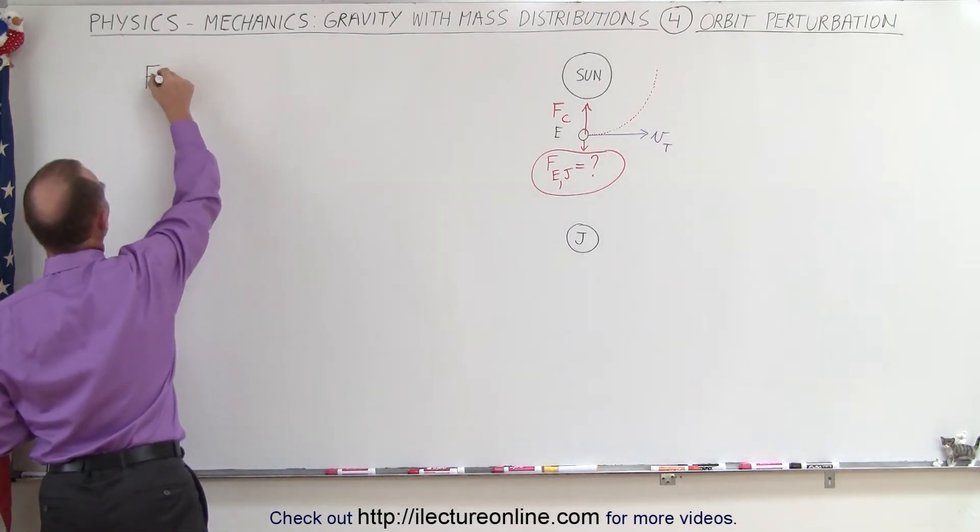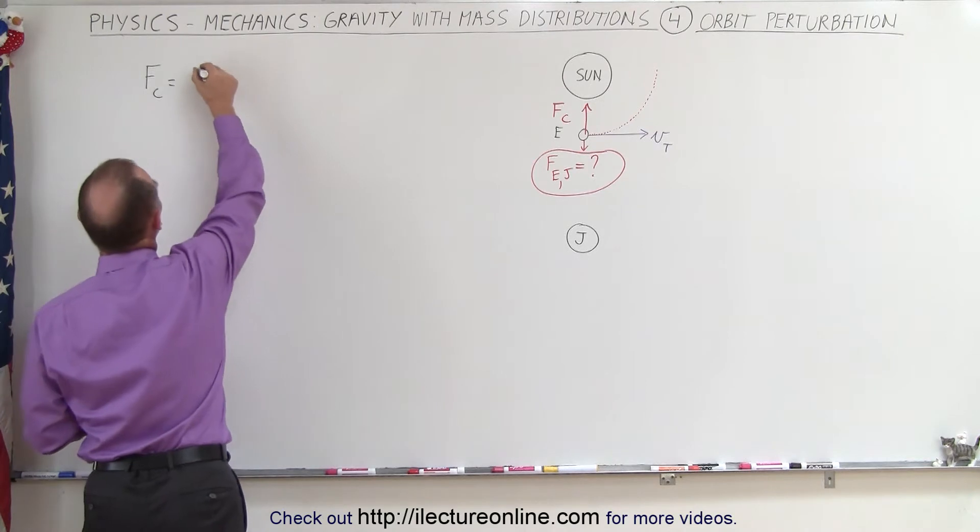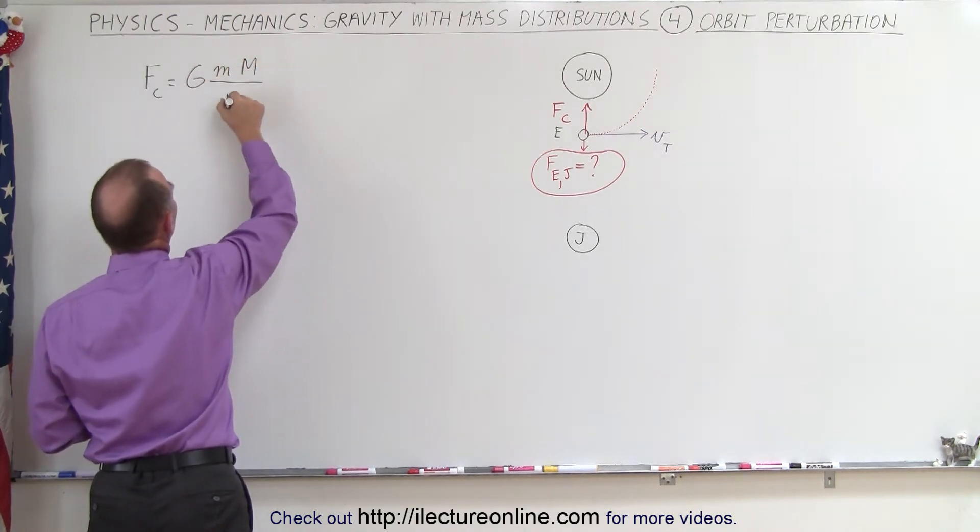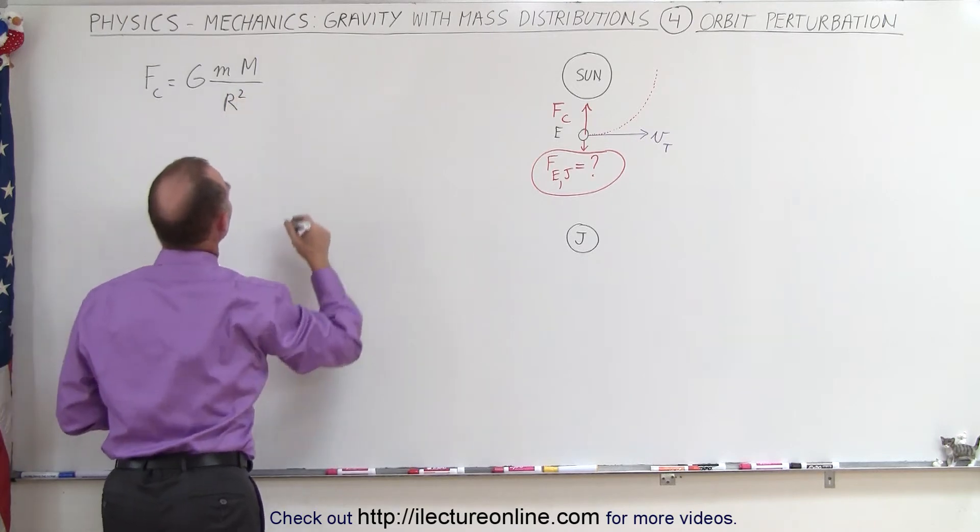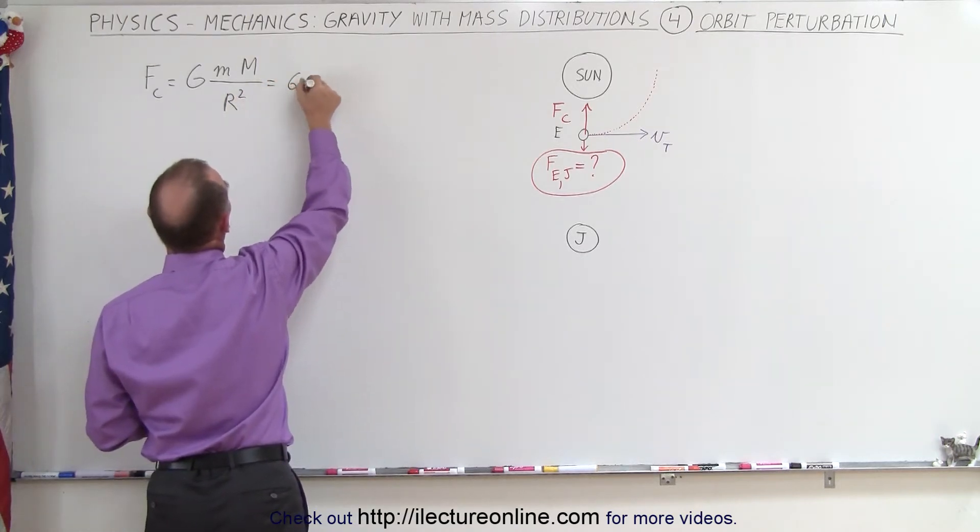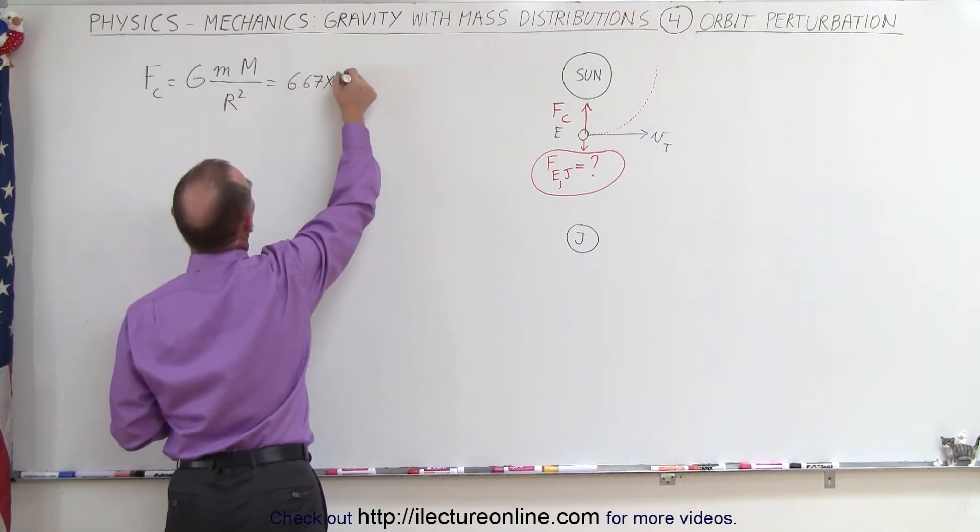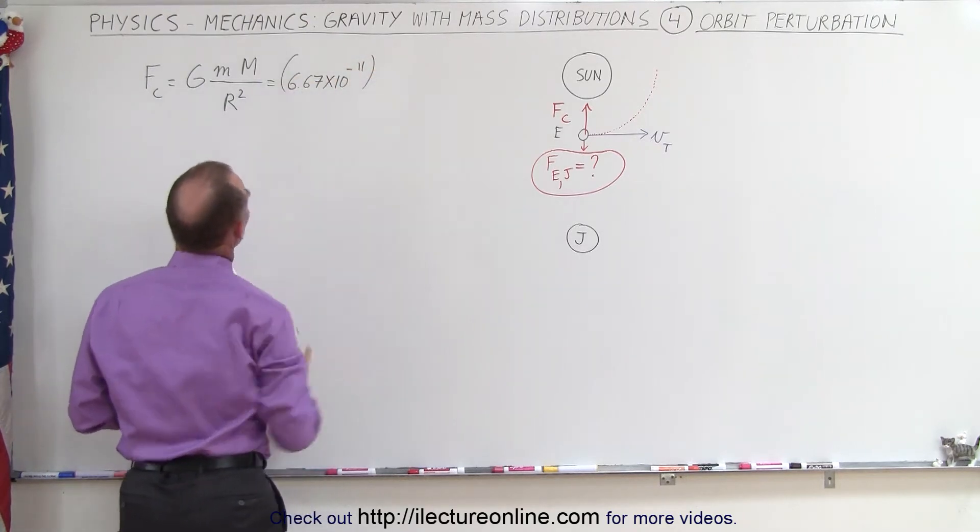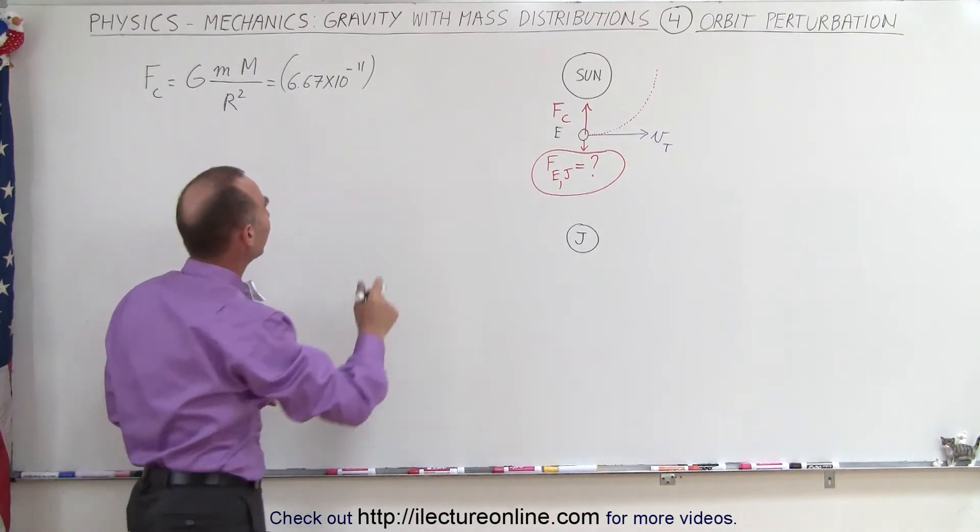So F centripetal is equal to G, the mass of the Earth, the mass of the Sun, divided by the distance between them squared. So this would be 6.67 times 10 to the minus 11. That would be Newton's meter squared per kilogram squared, but we'll leave out the units to keep it simple.